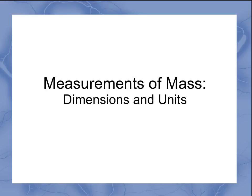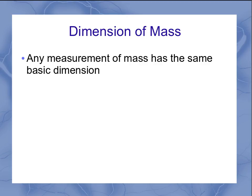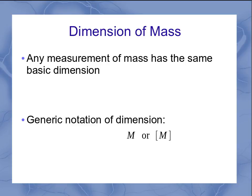Now let's talk about mass. When we look at measurements of mass, we want to keep in mind its dimensions and its units. Dimension is what type of measurement you're making. Mass is one of the standard ones, and any type of measurement of mass has that same basic dimension. Our generic notation for the dimension is a capital M.